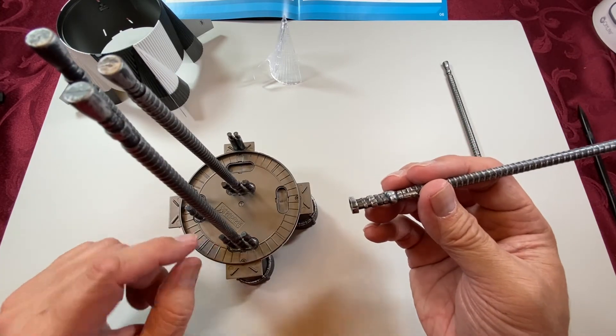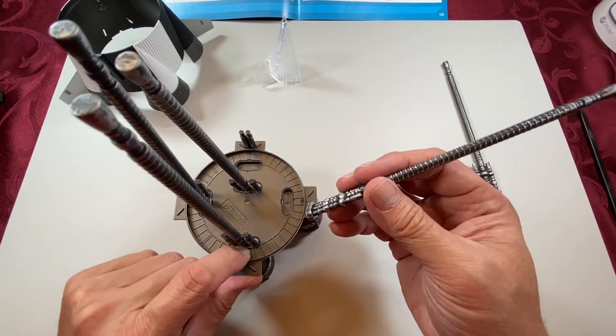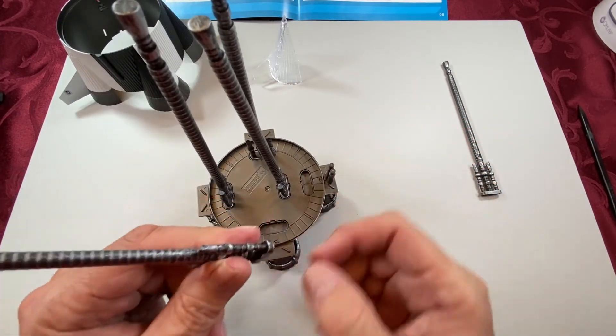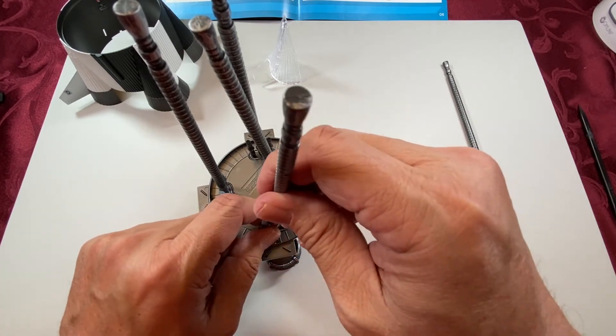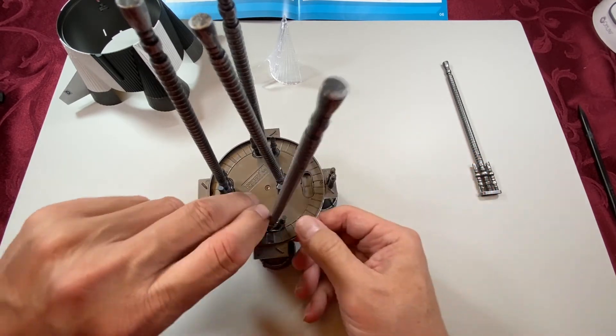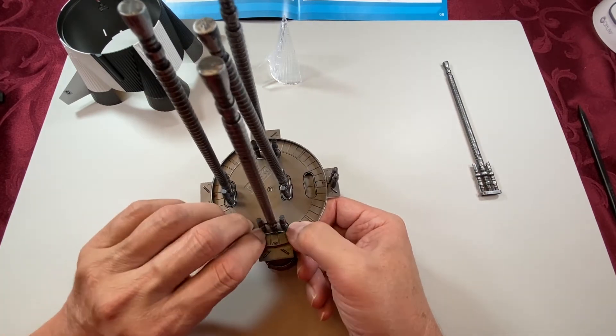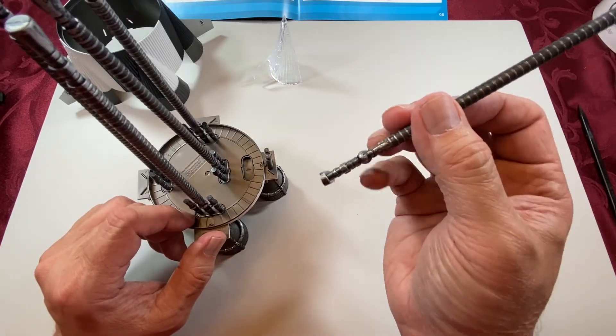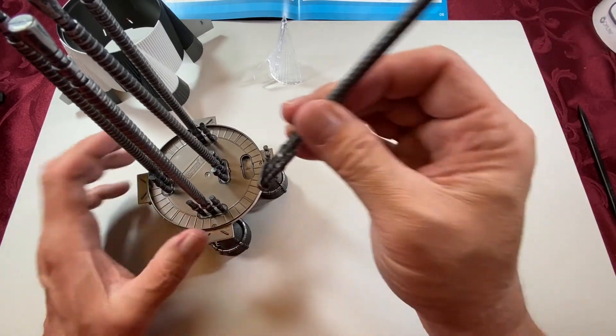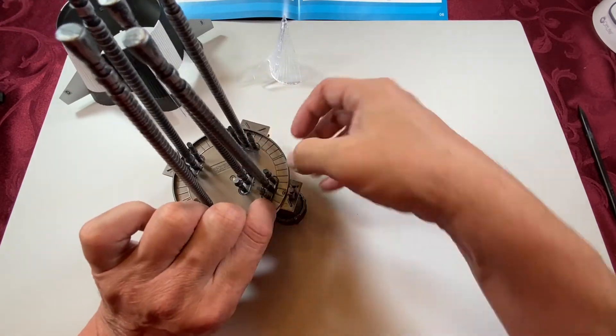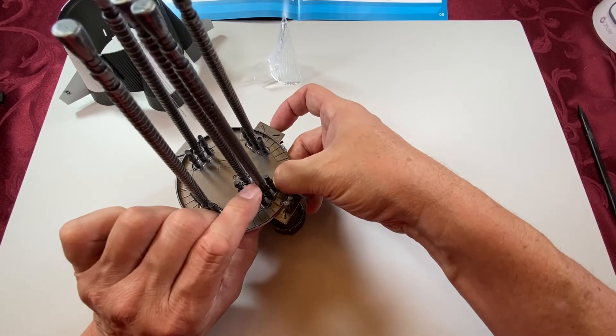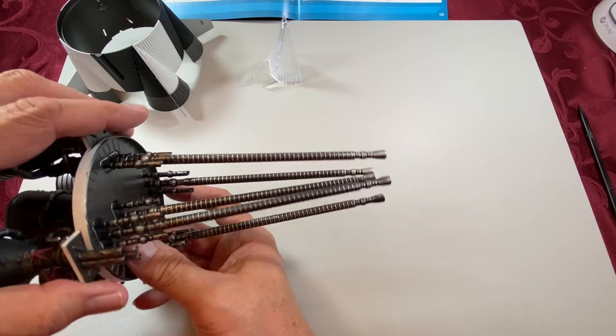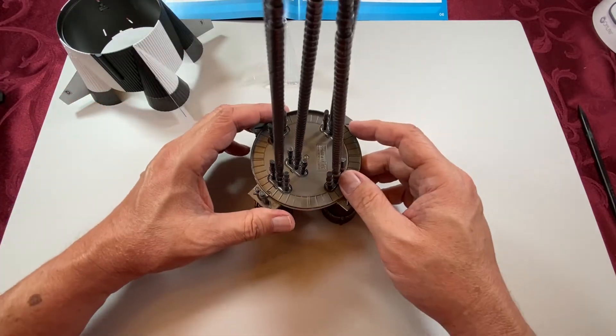I've got to go get a screwdriver. I'm going to use a flat-bladed screwdriver to push these in a little bit better. Some of them seem to have a little flash on them, so it makes it a little harder than the others to get it in. Take the bevel, make sure we've got it the right way so they're all facing in towards the rocket.